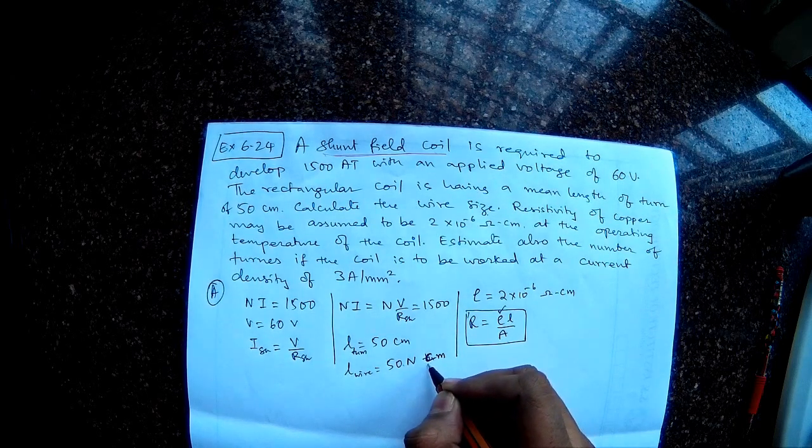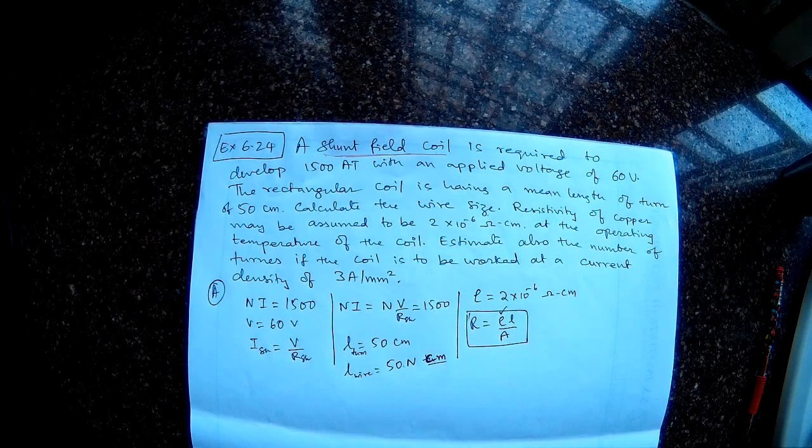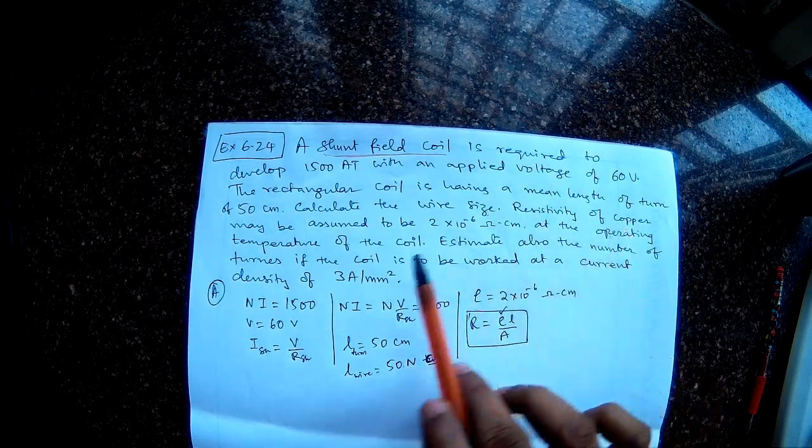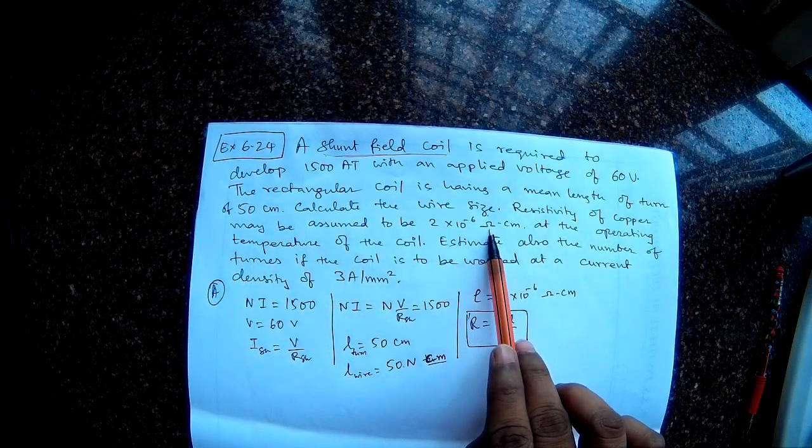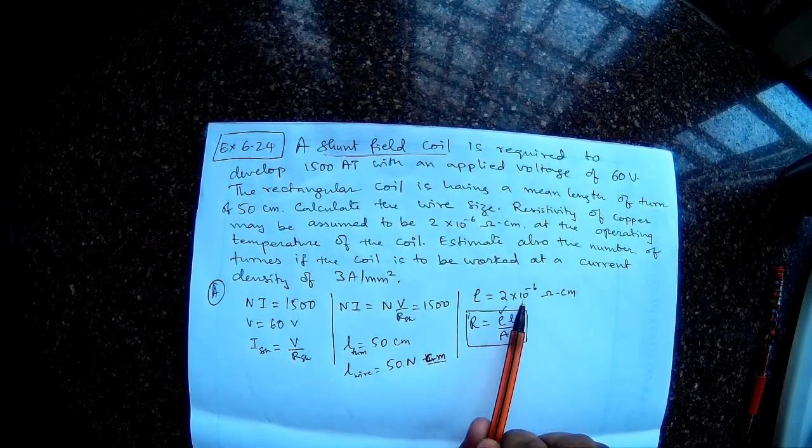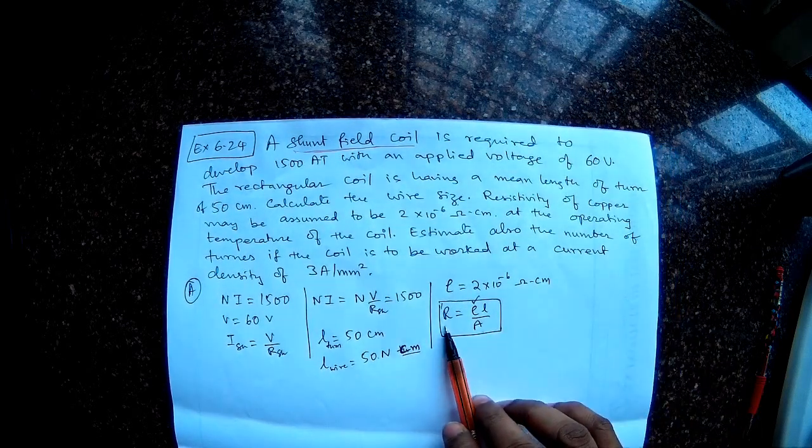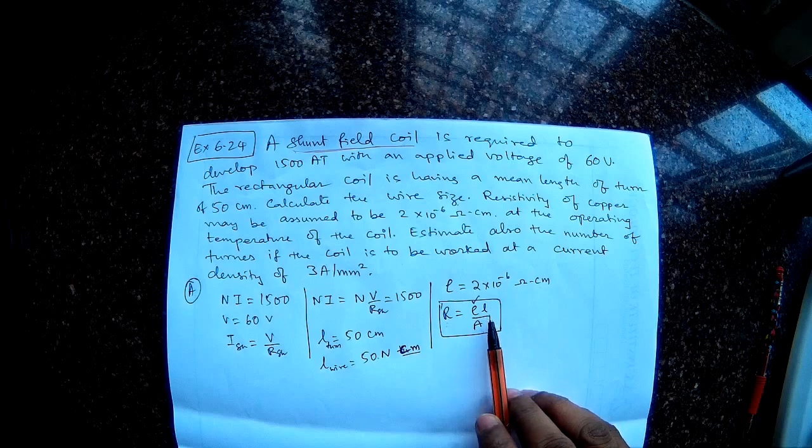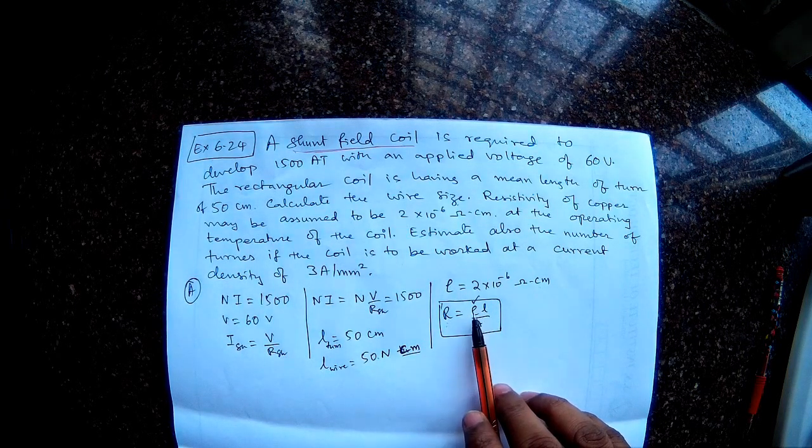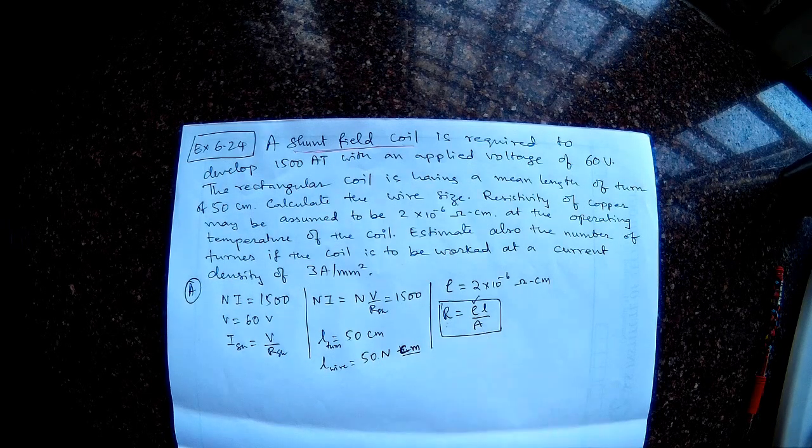Also remember we should be careful about what unit we are using. Another information given: resistivity of copper may be assumed to be 2 into 10 power minus 6 ohm centimeters. So I have written down that resistivity is 2 into 10 power minus 6 ohm centimeter. And we know from formula of resistance: resistance is rho L by A, resistivity into length divided by A, where A is the area of cross section of the wire.